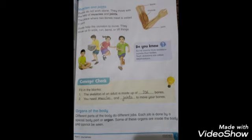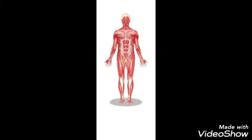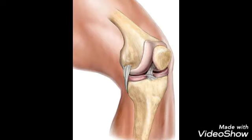The next topic is muscles and joints. Muscles and joints are very important for us because bones do not work alone — they move with the help of muscles and joints. Muscles and joints help the skeleton to move. They allow us to walk, sit, bend, or lift things. This is the picture of muscles and joints.